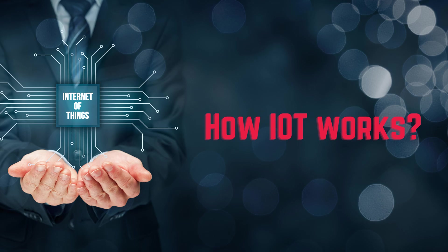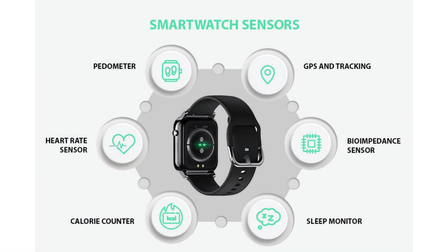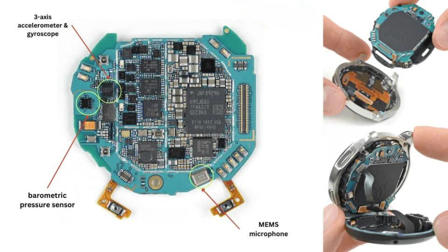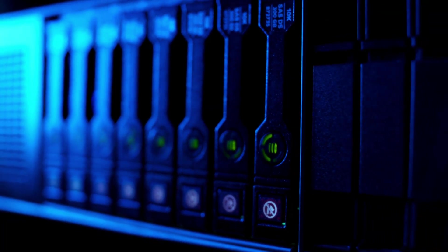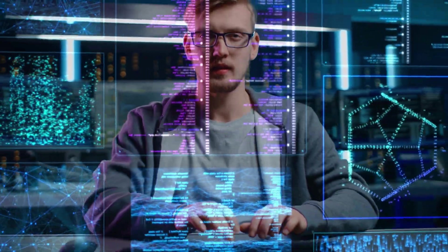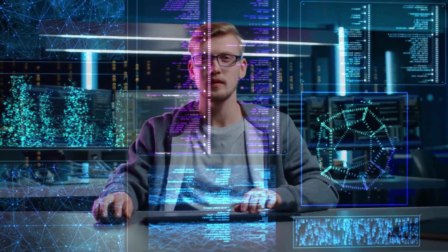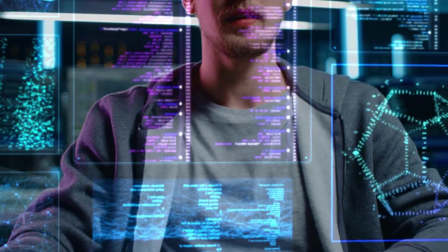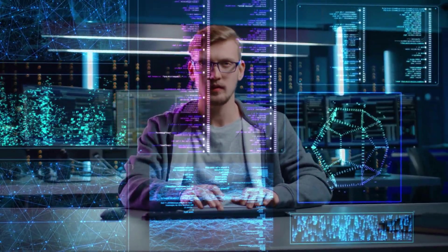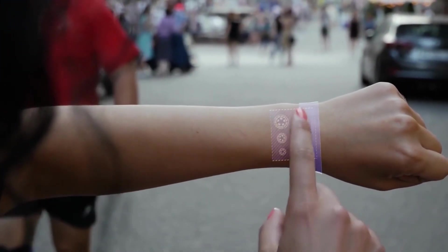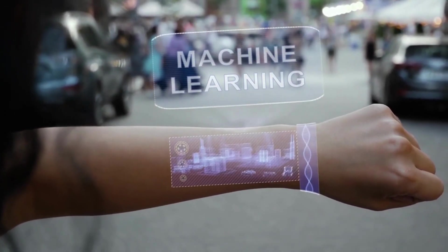Now, how does IoT actually work? It all starts with the sensors embedded within these interconnected devices. These sensors can measure various parameters such as temperature, pressure, humidity, and motion. They then transfer data over the internet to a central platform or cloud server for processing and analysis. Once the data reaches the cloud, powerful algorithms and machine learning techniques are applied to extract valuable insights — ranging from detecting patterns and anomalies to predicting future events or optimizing resource allocation — enabling data-driven decisions and enhanced productivity.